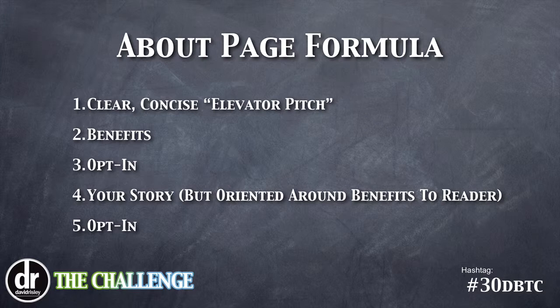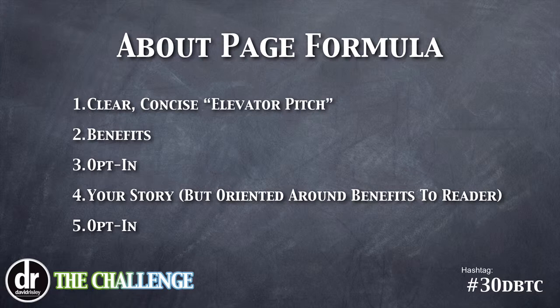Step four is what everybody else does — include a story. You want to have information about you and where you came from, or if it's a brand blog, the history of that brand. But you don't want to make it boring. Tell a real story with emotional highs and lows, just like any actual plot would have. Keep it succinct, and as you write it, keep it oriented around the benefits to the reader. Don't include things about your past that have nothing to do with what you know or what the benefits are.